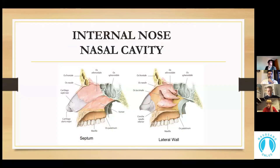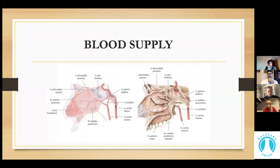Each part of the nasal cavity has four walls: medial, represented by the septum which is composed of a cartilaginous part and bony segments; lateral, which has turbinates on it and is a very complex anatomical structure and very important area clinically; and roof and floor. Blood supply to the nasal cavity is done by terminal branches of the maxillary and facial arteries originating from the external carotid artery, and ethmoidal branches of the ophthalmic artery originating from the internal carotid artery.